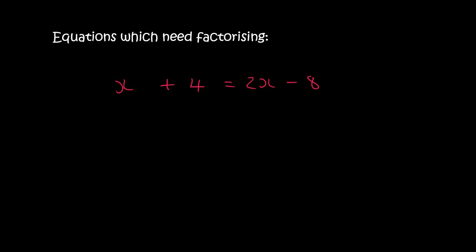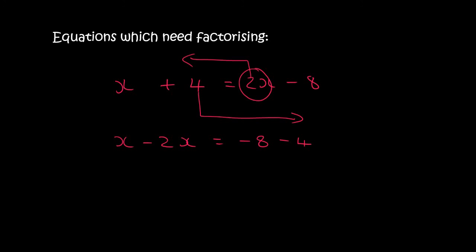This one doesn't have any x squareds, so I use the old method — take all the x's to one side and all the numbers to the other side. I end up with x minus 2x equals minus 8 minus 4. So x minus 2x is minus x, and minus 8 minus 4 is minus 12. I then divide both sides by minus 1, and so x equals 12.